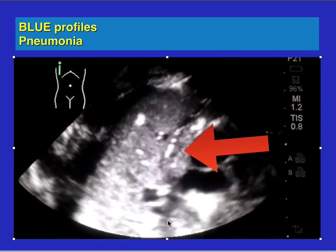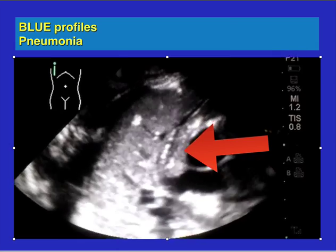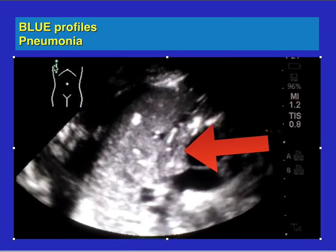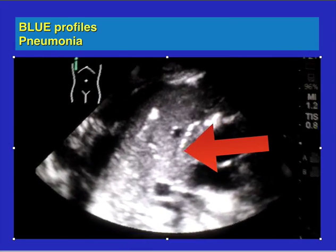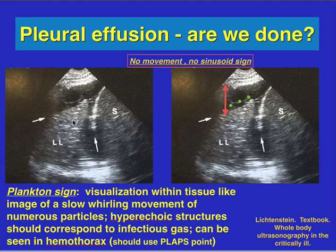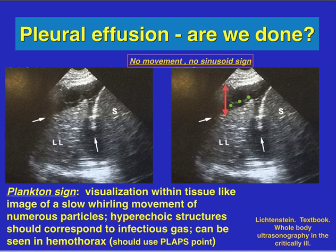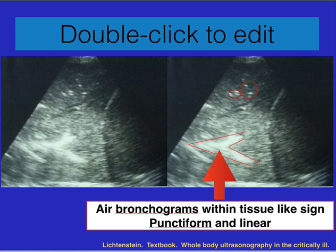You can see air bronchograms with the air moving inside — this is actually in the right upper chest, this is actually the lung. You can also see the plankton sign, which is visualization within the tissue-like image of slow whirling movements. For instance, right here you see the left lung, and in this area you may see slow whirling movements that indicate hyperechoic structures and could correspond to gas.